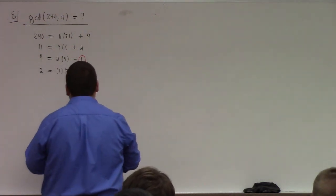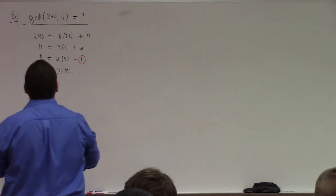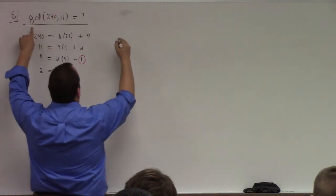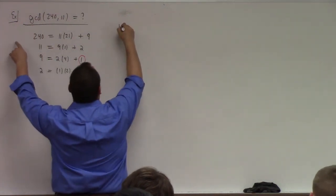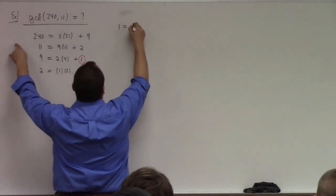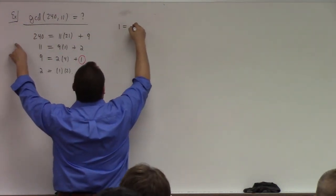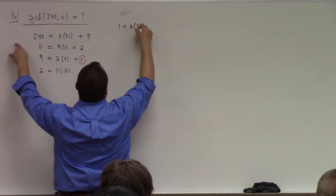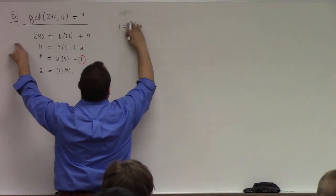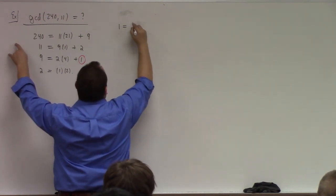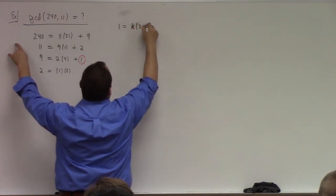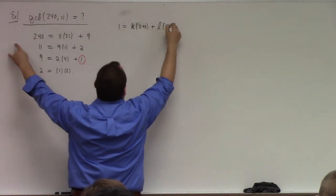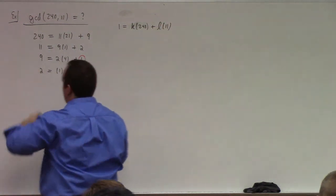What's more interesting is to write 1 as an integer linear combination: 1 equals k times 240 plus l times 11. How do we figure those out? That's really what I'm after here.